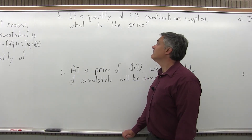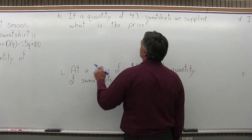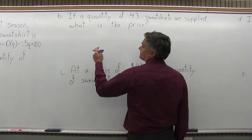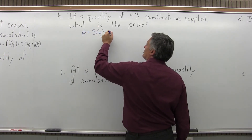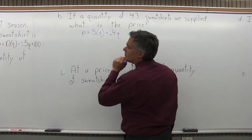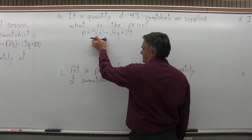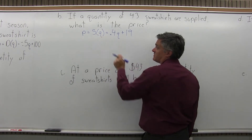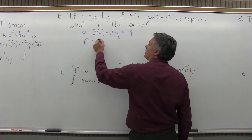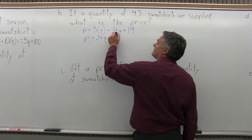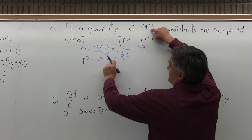Part B says: if a quantity of 43 sweatshirts are supplied, what is the price? Because the question asks about supply, we start with the supply equation, which is P equals .4Q plus 19. Once I know I have the correct equation, I don't need the S(Q) — that's just to identify it as the supply equation as opposed to demand. Now the 43 is going to go in for Q, because the 43 is a quantity, and then I'll solve for P.